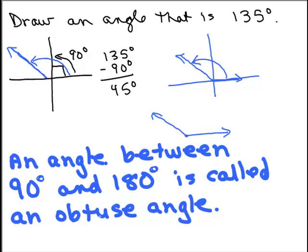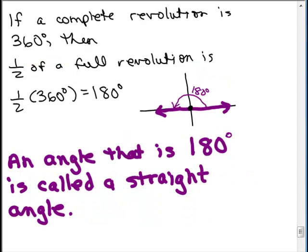Now the first angle we looked at was 180 degrees. Here was our 180 degree angle that was half of a full revolution. And we call this a straight angle. An angle that is 180 degrees is simply called a straight angle because it just looks like a straight line.